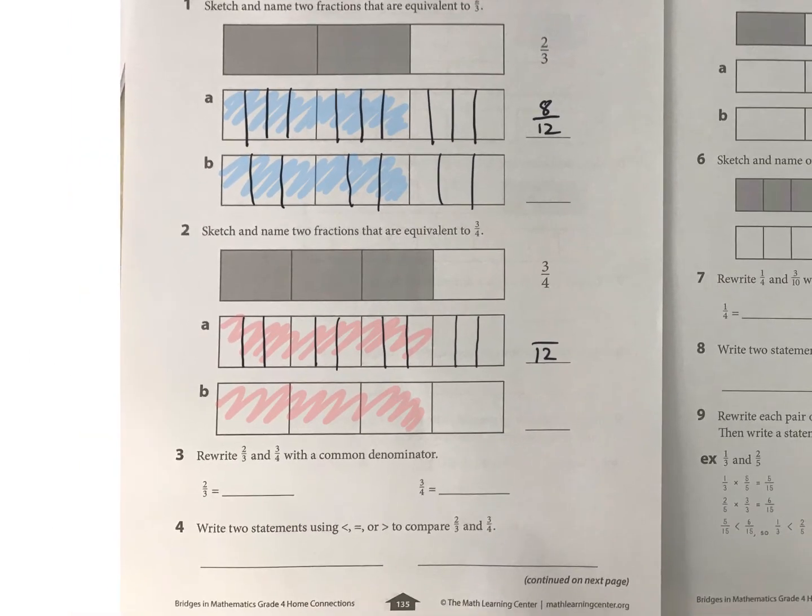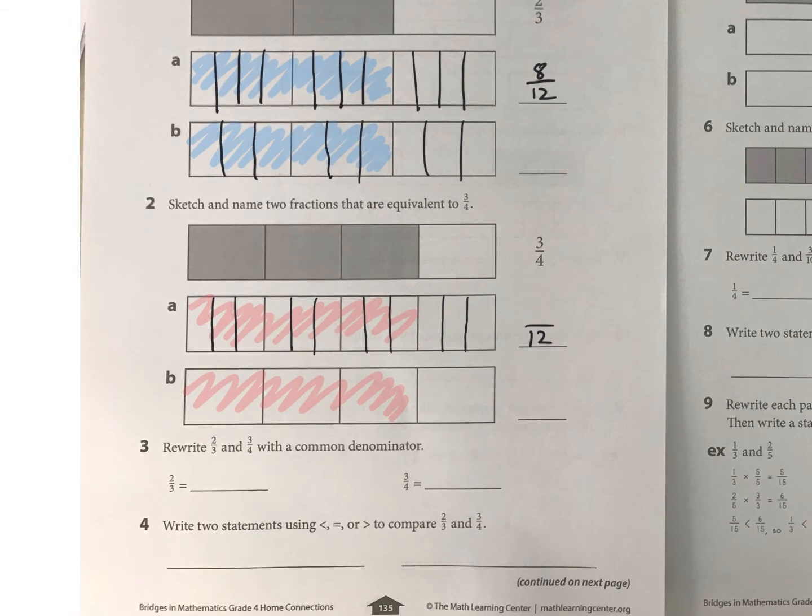And now it's saying, rewrite two-thirds and three-fourths with a common denominator. So I kind of cheated already because I did those for you with twelfths, right? So if I put twelfths here, we already did that one, right? There it is. And that's what it's going to look like in twelfths.